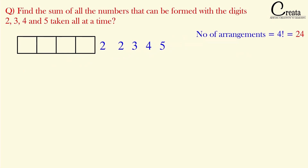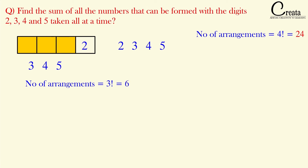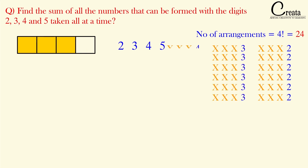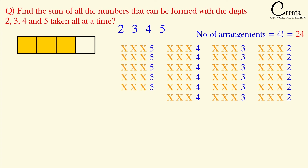If we fix the digit 2 in the last (units) position, the remaining digits 3, 4, and 5 fill the other 3 slots, giving 3 factorial = 6 arrangements. So out of the 24 numbers, 6 end with 2, 6 end with 3, 6 end with 4, and 6 end with 5, totaling 24 numbers.